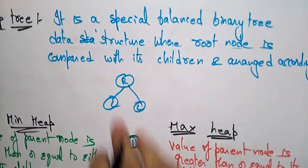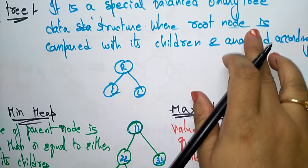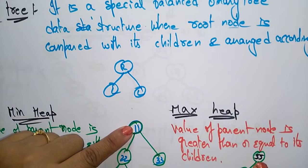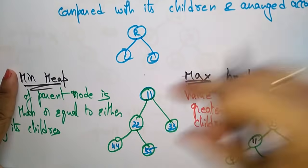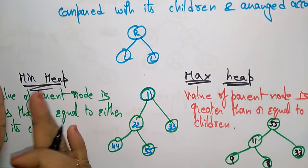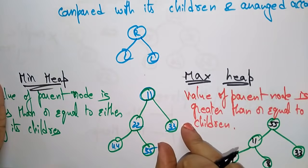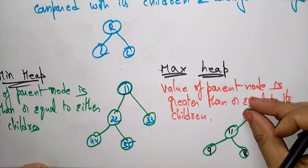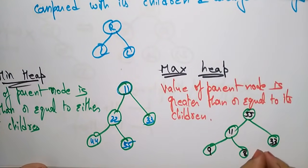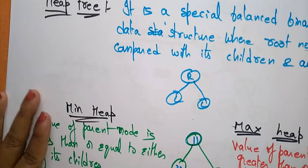That's why I say a heap tree is a special balanced binary tree where the root node is compared with its children and arranged accordingly. If you are constructing a min heap, the parent node should be less than the children node. If you are constructing a max heap, the parent node should be greater and the rest should be less than the parent.